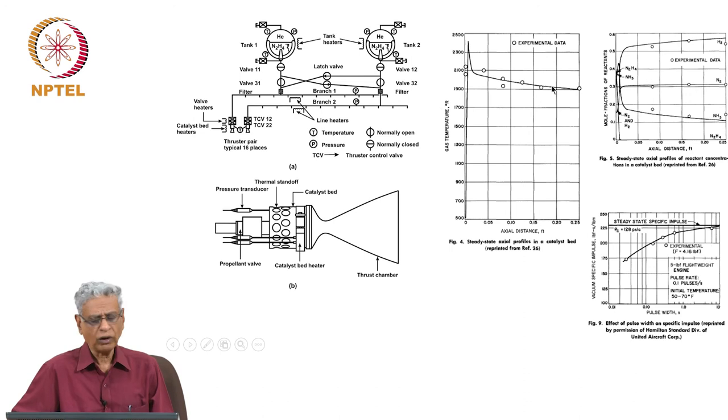If you look at the temperature behavior through the system, the temperature peaks at about 1100 K at the end of the thrust chamber. It hits a high value and goes down. You see the composition with distance: ammonia is coming down, hydrogen is going up. This is the way the system behaves.